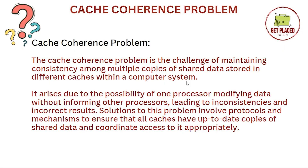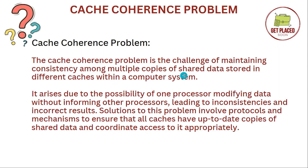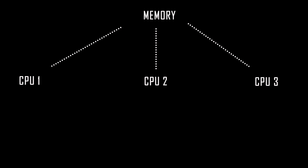Now let's understand the cache coherence problem — this is a very common and important problem. The cache coherence problem is a challenge of maintaining consistency among multiple copies of shared data stored in different caches within a computer system. Consider a multi-processor scenario with multiple CPUs — say CPU1, CPU2, and CPU3 — all using the same shared memory. CPU1 has cache 1, CPU2 has cache 2, and CPU3 has cache 3, each with their own respective caches.